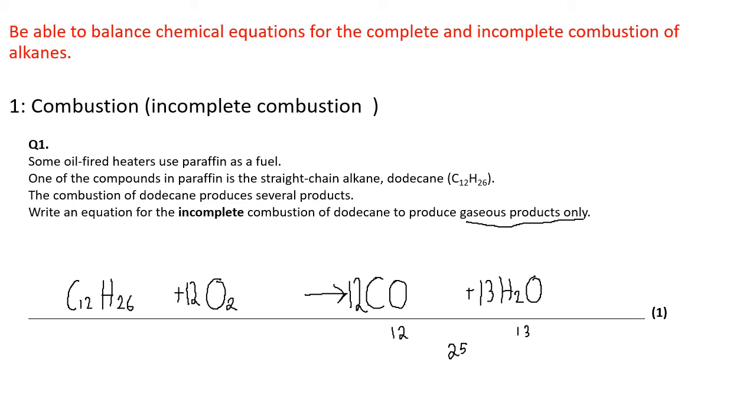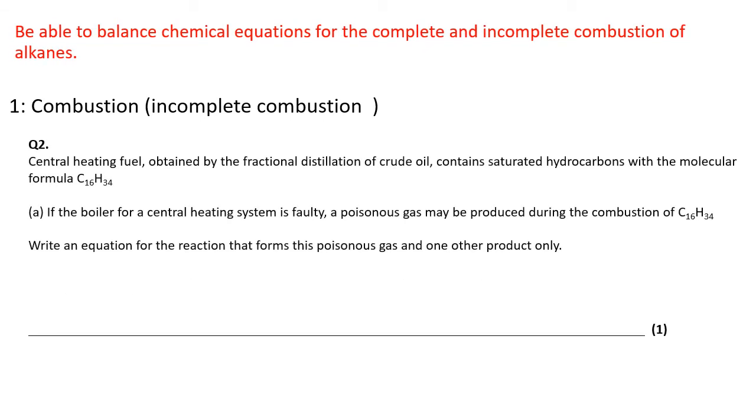Second question, similar. Central heating fuel obtained by the fractional distillation of crude oil contains saturated hydrocarbons with the molecular formula C16H34. If the boiler for a central heating system is faulty, a poisonous gas may be produced. So there is again a clue. During the combustion of C16H34, write an equation for the reaction that forms this poisonous gas and one other product only. Okay, so they are again after just two products. We know one of them is going to be water, and now the cue for you to think carbon monoxide is this term poisonous gas. So again like we did in the last video, we'll write out an equation and we'll have just carbon monoxide and water.